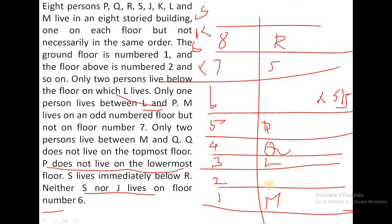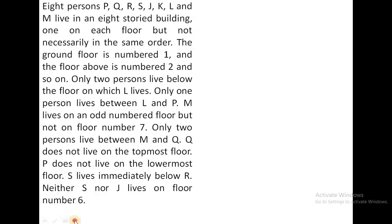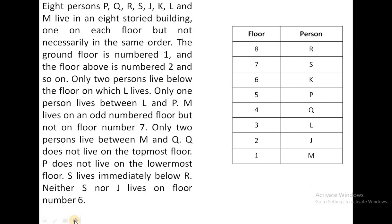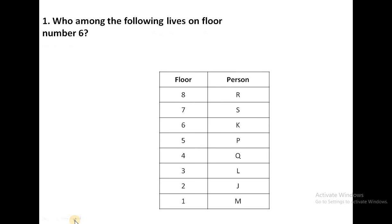If J is on the sixth floor, then J is on the second floor. Remaining, there is one letter K, so K is here. This is your order: R, S, K, P, Q, L, J, M. So check the correct answer. Who among the following lives on floor number 6? Floor 6 is K.